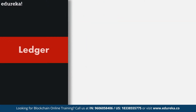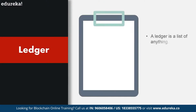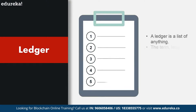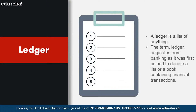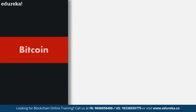Now let's look at the other half of the definition: blockchain is a public ledger system. A ledger is a list of anything. The term ledger originates from banking, as it was first coined to denote a list or book containing financial transactions. In reference to blockchain technology, a ledger is all the transactions that are committed on the network.